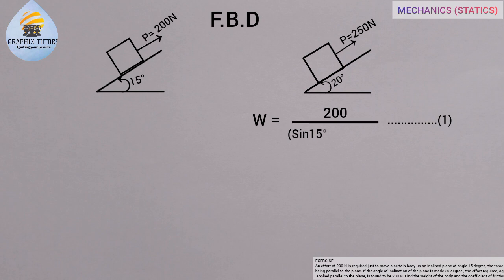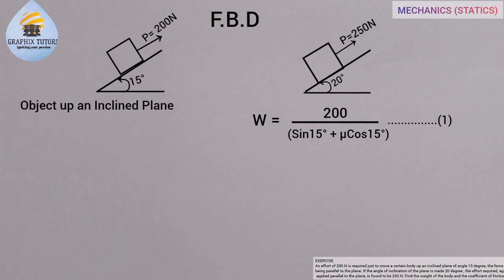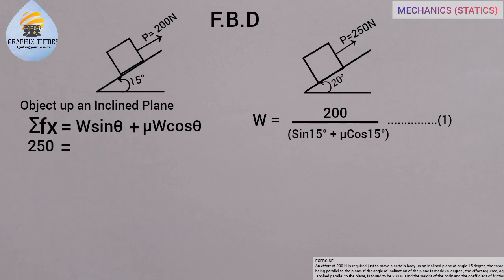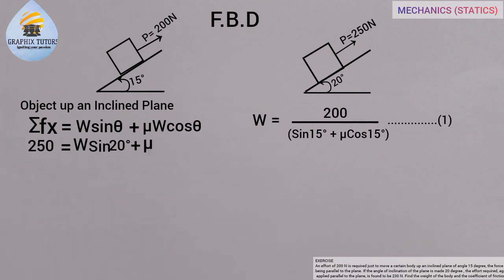For case two, the same situation applies. Since the object is moving up the inclined plane, the formula is: summation of Fx equals W sine theta plus mu W cos theta. The effort here is 250 Newton, so 250 equals W sine 20 degrees plus mu W cos 20 degrees, because the angle of inclination is now 20 degrees.